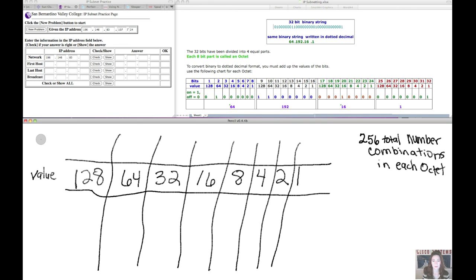Now that we understand that the 32-bit binary string is what the router and devices see, we have to also find a way to tell those devices which of those bits belong to the network and which of those bits belong to the host.